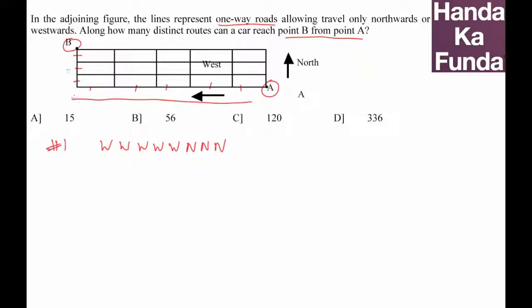If I rearrange this such as I'll go west, then three north, and then the remaining three west, what will that mean? I'll go west, then I will go three north, and then I will go the three remaining west. So basically any arrangement of this will give me a different way, a distinct route that a car can take to go from point A to point B.